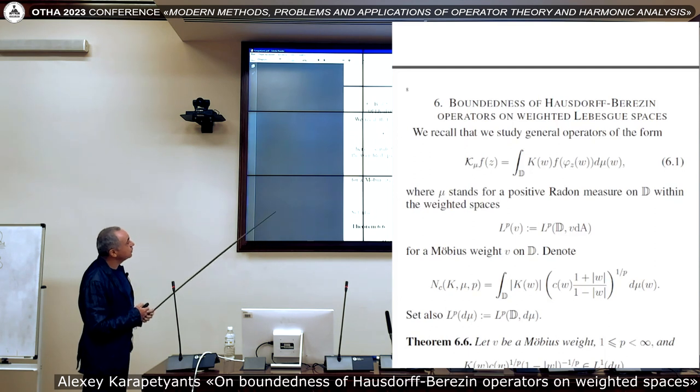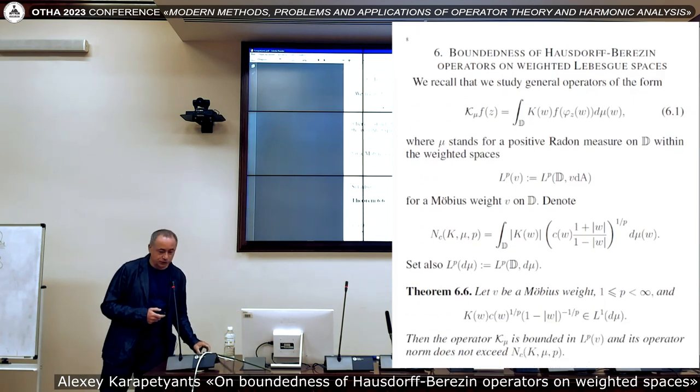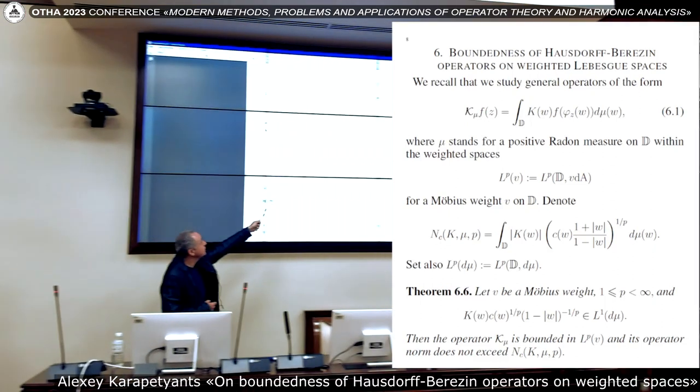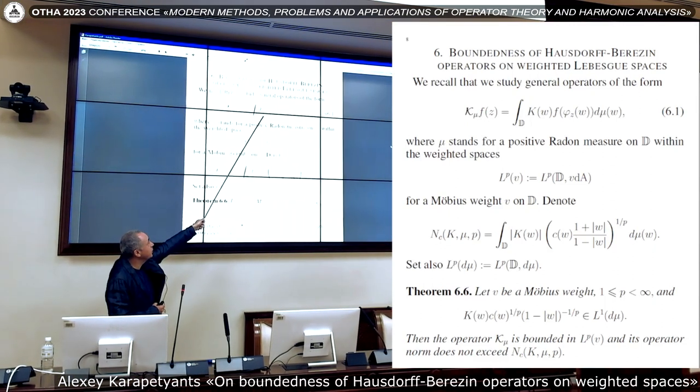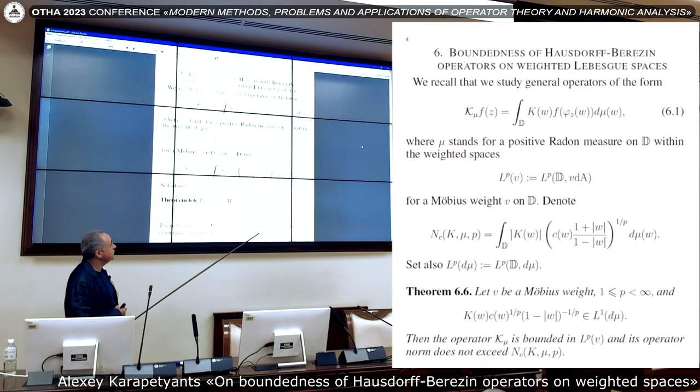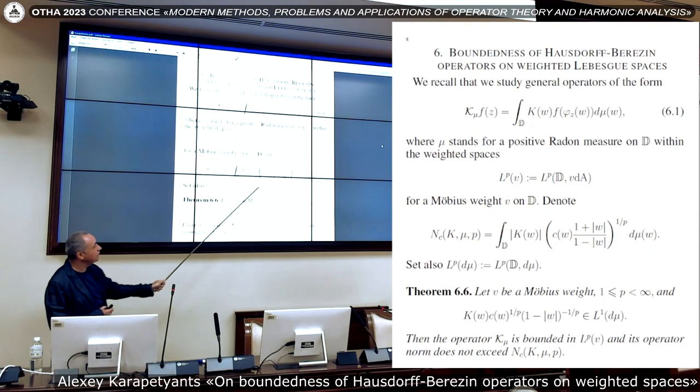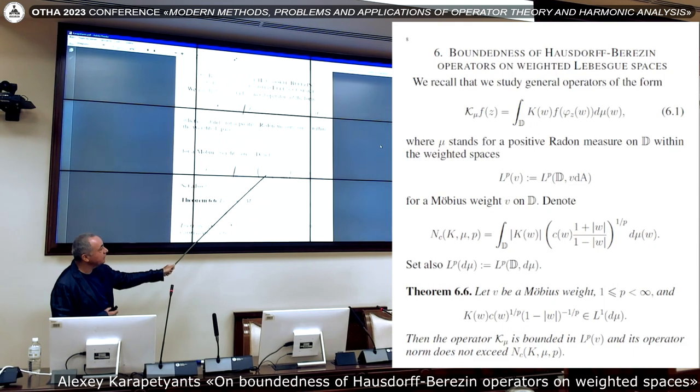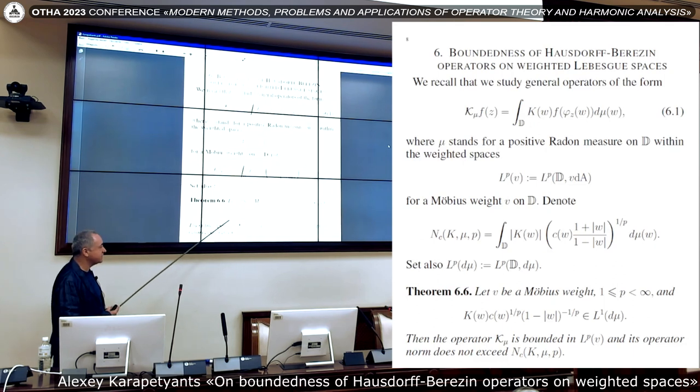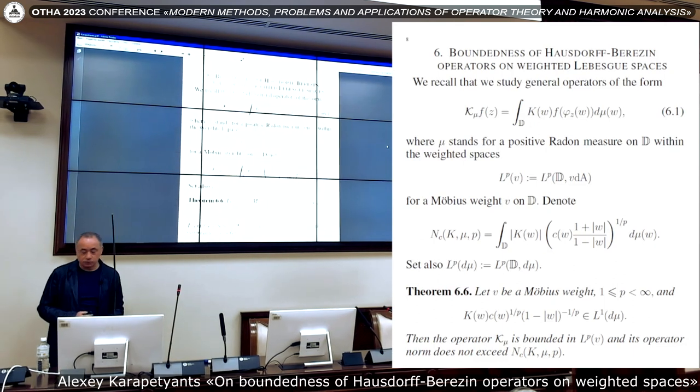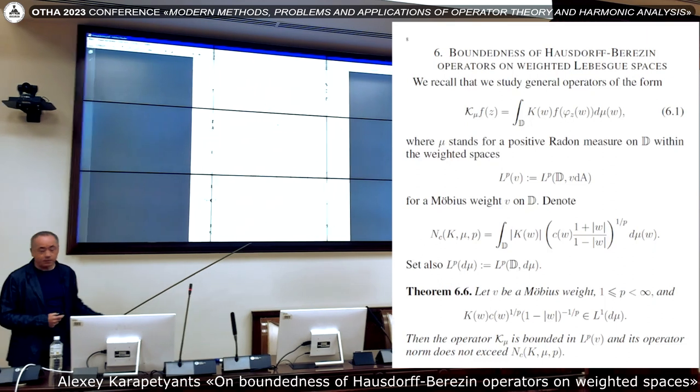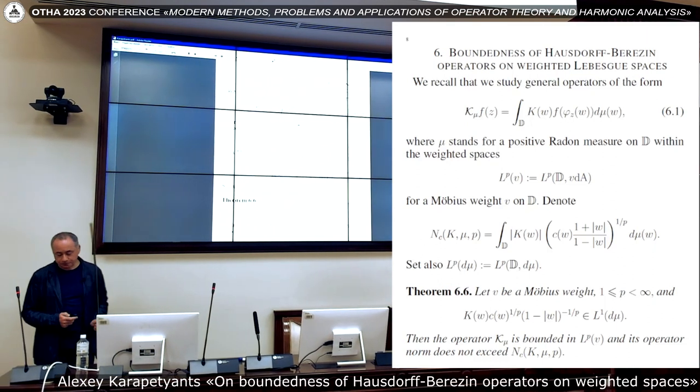So let's go to boundedness, and I'll have two approaches. The first approach you can see here. Again, I just repeat that we consider these operators with this class of operators with a general kernel and general positive radial measure in this L^p weighted space. Let us introduce this construction. Here you see this upper bound comes here. And if this number is finite, or if in other words, this construction belongs to L¹ with respect to this measure, then our initial operator is bounded in a weighted space, and its operator norm does not exceed this number.